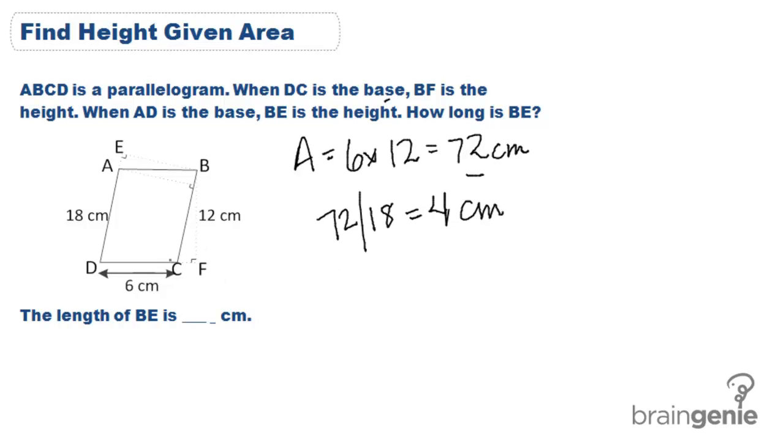Our area is not changing just because our base and our height are changing. So that's why we can keep that 72 the same and divide by a different length to find the other height.